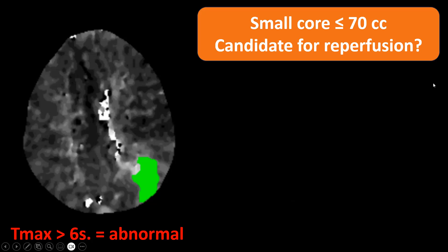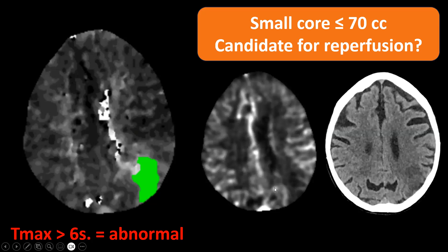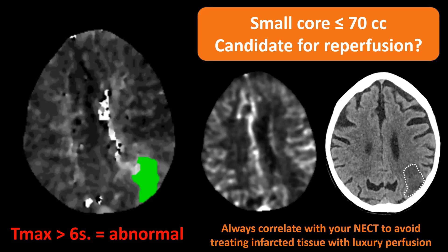Then there's the reverse situation. We have a patient with abnormal Tmax >6 seconds and a small core, smaller than 70 cc. On non-enhanced CT we clearly see an area of brain tissue that is hypodense, with absence of gray-white matter differentiation.